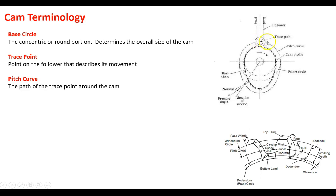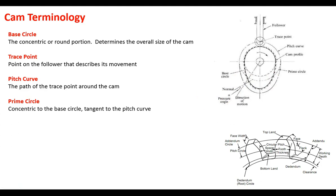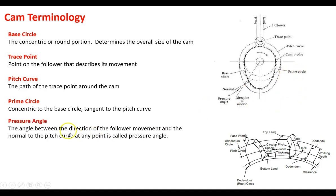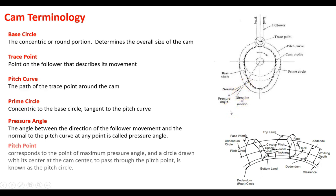The pitch curve is the path the trace point follows. The prime circle is concentric to the base circle — here's the base circle, and going around that is the pitch circle, tangent to the pitch curve. There's also the pressure angle — the angle between the direction of the follower movement and the normal to the pitch curve at any point, referred to as alpha. The pitch point corresponds to the point of maximum pressure angle, and a circle drawn with its center at the cam center to pass through the pitch point is known as the pitch circle.